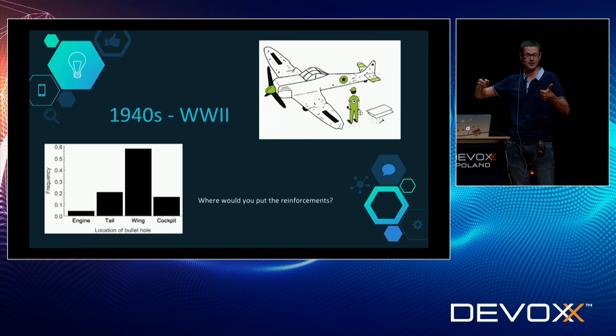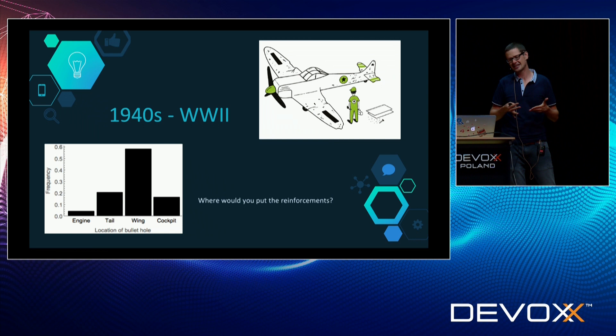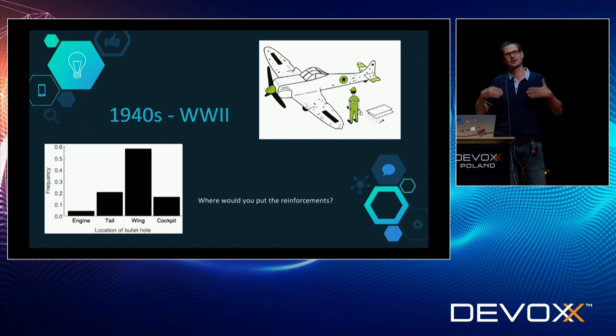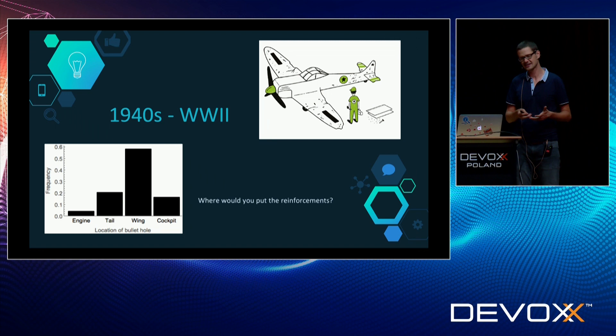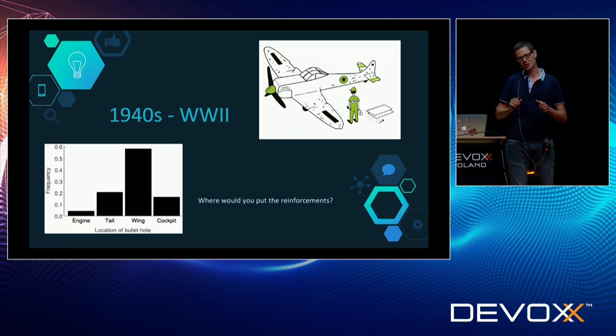They were looking at only a portion of the data — only the planes that came back. And the planes that came back actually survived, which is a good thing. So look at the engine — because only the fewest amount of planes that came back had holes in the engine, which indicates that the ones that got holes there were destroyed. So when they did the opposite and reinforced the engine, that actually moved the needle and they saw far more planes surviving. This is indicative for us because the data is really important when you do machine learning. If you don't have good data and good representation, you might draw wrong conclusions and your algorithm won't work very well.